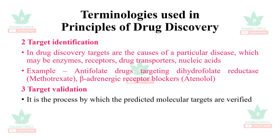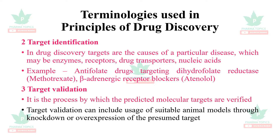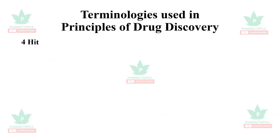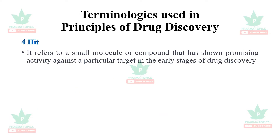Next is: what is target validation? It is the process by which the predicted molecular targets are verified. Target validation can include usage of suitable animal models through knockdown or overexpression of the presumed target.